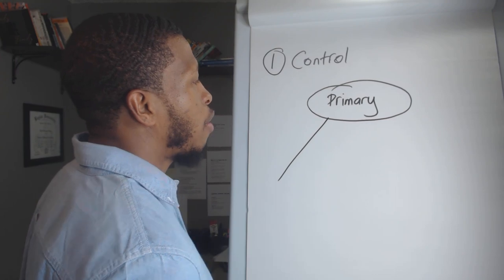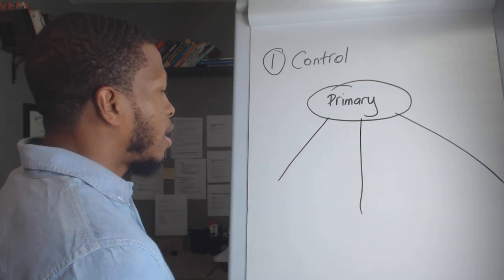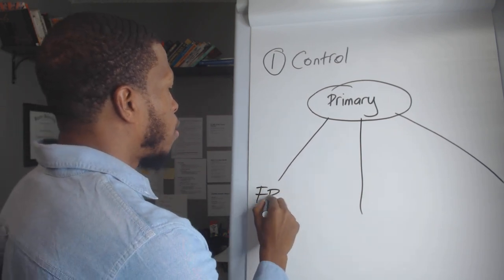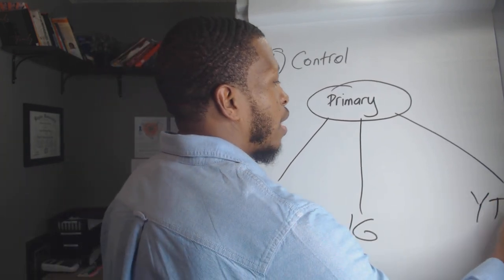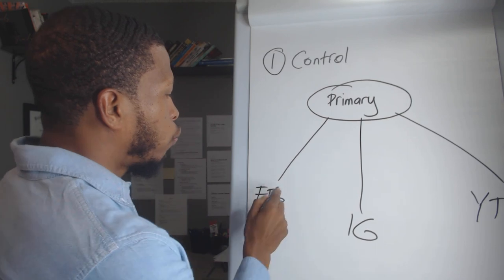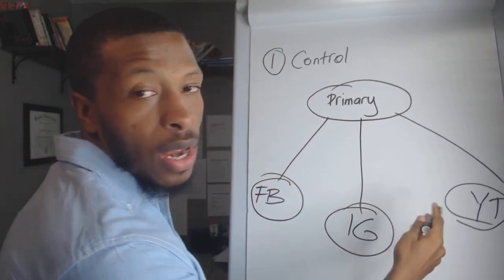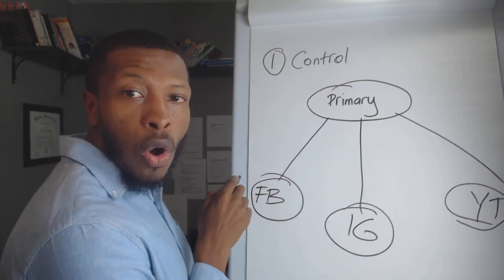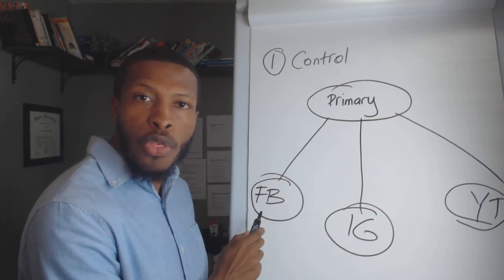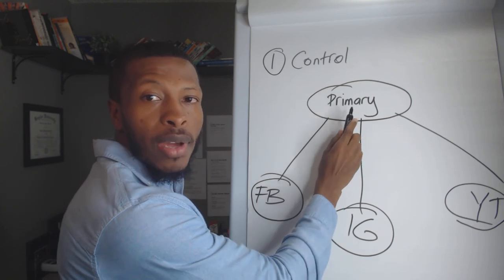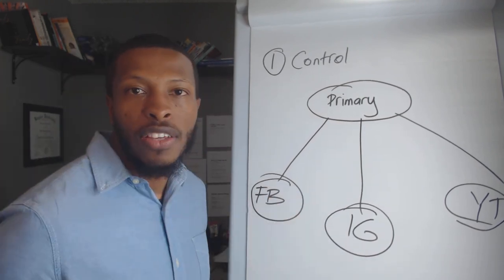You can still be on other platforms, but it should kind of go like this. So you might have a platform here. You might have a platform there. You might have a platform there. And maybe let's say, you know, this is Facebook. This is Instagram. This is YouTube. And that's all good. And you're starting to create some buzz on all of these respective platforms, but never, ever settle only for the platform. You should always be bringing the people from that platform back to a primary hub that you can control.